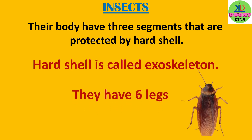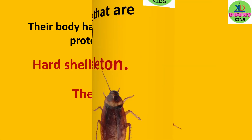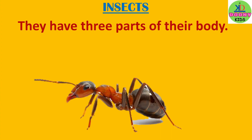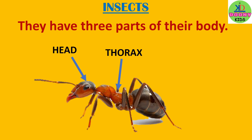They have six legs. They have three parts of their body: head, thorax, and abdomen.